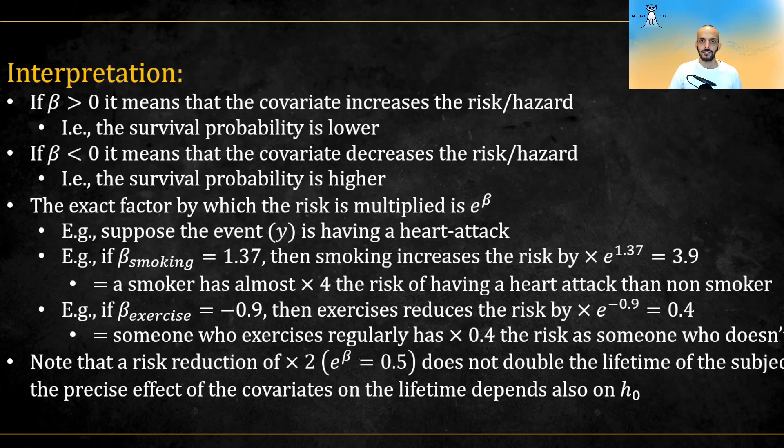Similarly, if the beta for exercise is minus 0.9, then someone who exercises has less than half the risk of heart attack than someone who doesn't. Note that the precise effect of the actual survival time depends also on H0, and so we cannot say that if the risk is halved, the lifespan doubles.